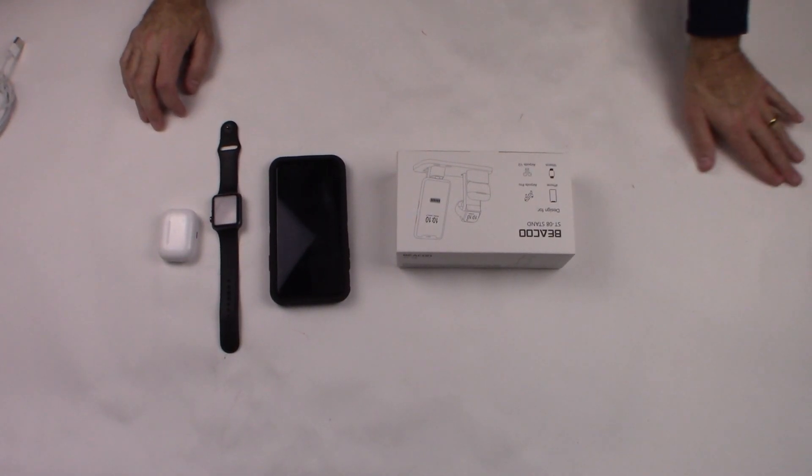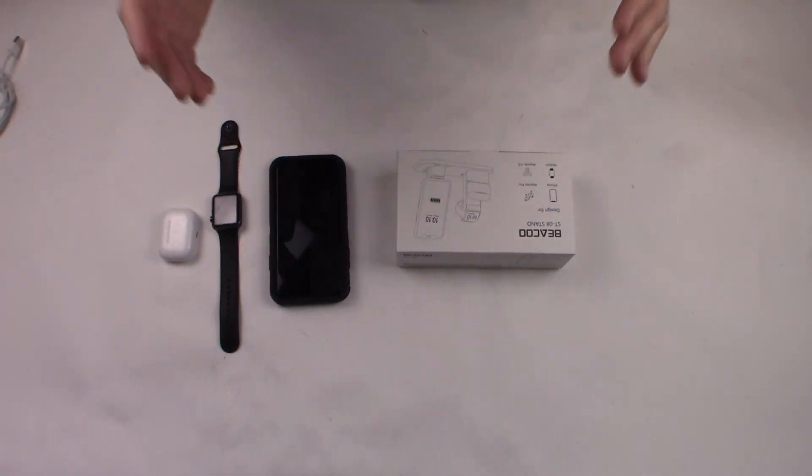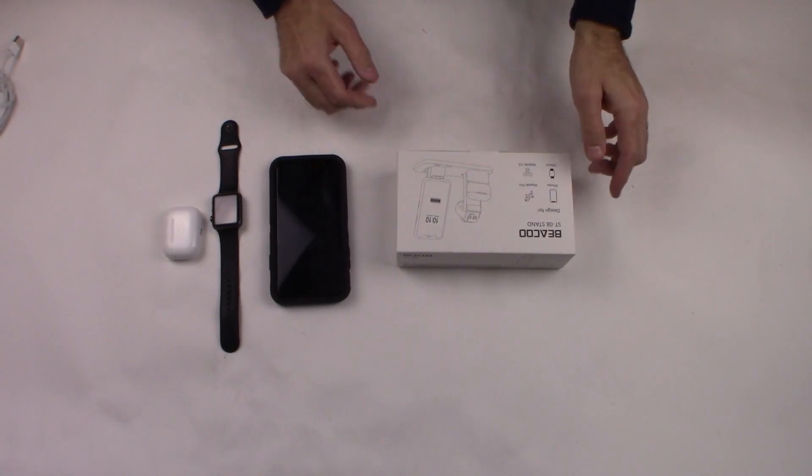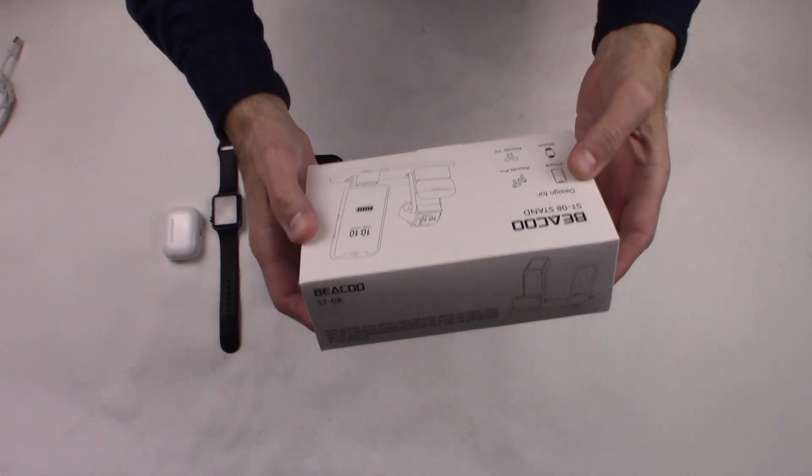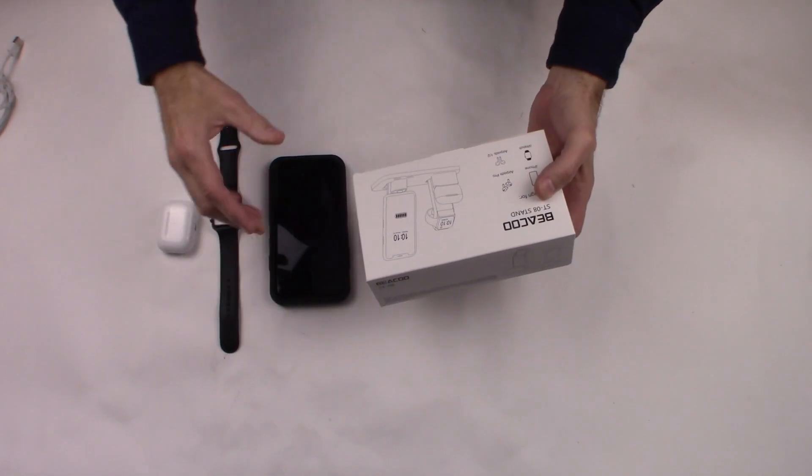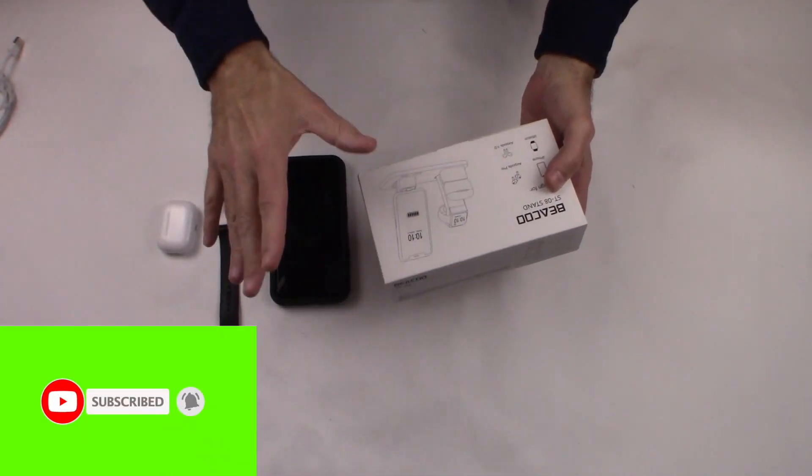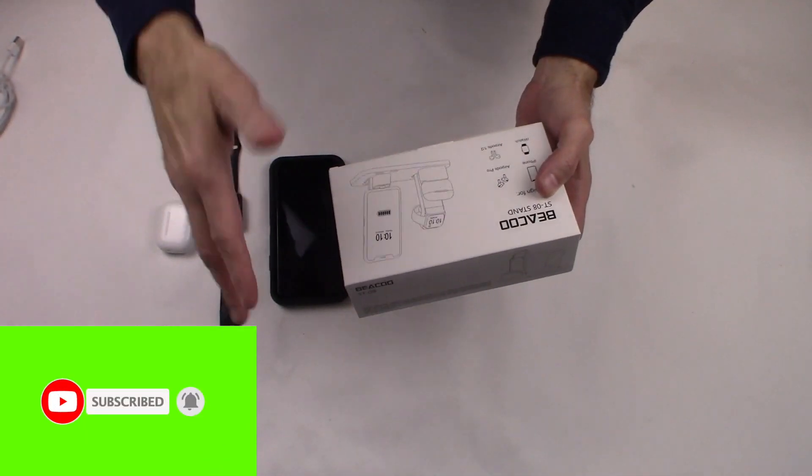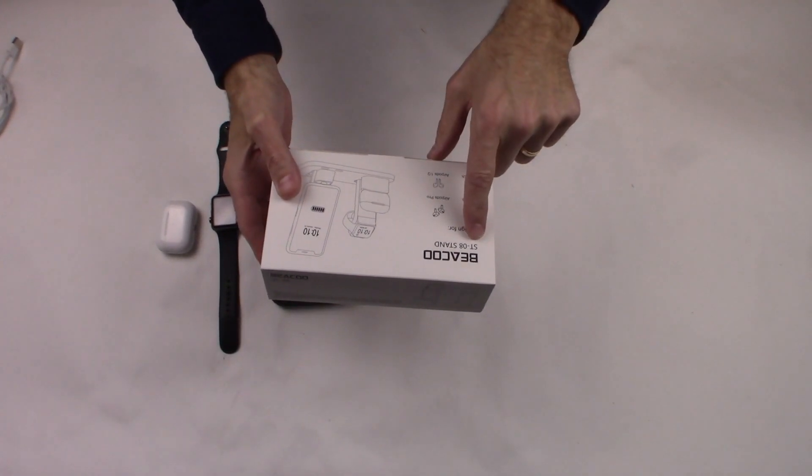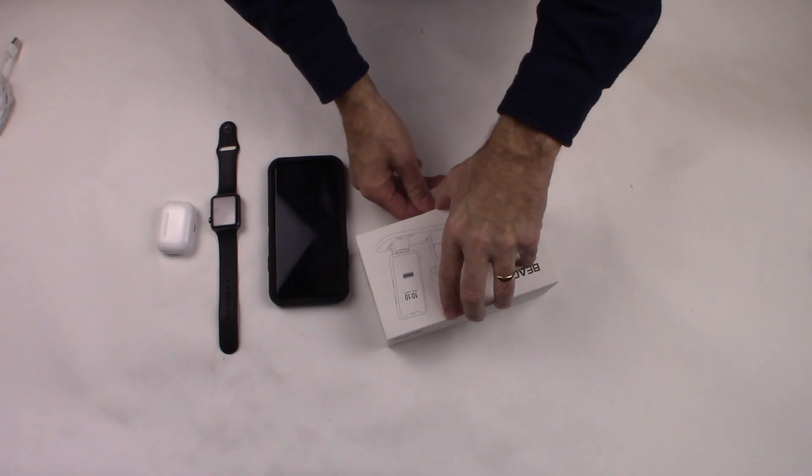Hey guys, thanks for tuning in to Your Review Channel. If you're interested in a management system for your iPhone, your watch, your AirPods, I have something here for you from Beacoo. It's basically a multi-purpose stand - holds your phone, holds your watch, and holds your AirPods. Instead of putting them all over the house and everything all over the place, it's just one system. Easy to set up and easy to figure out, so you know where everything is. Model number ST-08. Let's open this up and see what we have in the box.